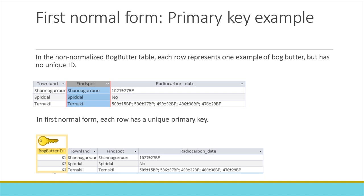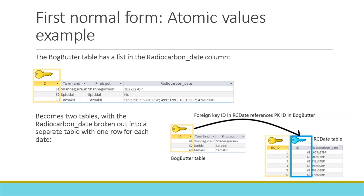The bog-butter table has a list in the radiocarbon date column, showing multiple dates separated by semicolons for when radiocarbon dating has been repeated for the same bog-butter. To put this into first normal form, we break out the radiocarbon dates into their own table. The rc-date table has its own primary key (rc-id), an ID column that contains the ID of the bog-butter this date belongs to, and a radiocarbon date column with one and only one date in it. The ID column of the rc-date table is a foreign key referencing the primary key of the bog-butter table.